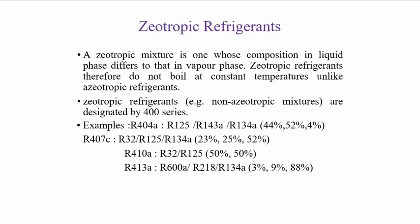Then we have zeotropic refrigerants. A zeotropic mixture is one whose composition in liquid phase is different from that in the vapor phase. Zeotropic refrigerants therefore do not boil at constant temperature. Unlike azeotropic refrigerants, zeotropic refrigerants are designated by the 400 series. Examples are 404A, 407C, and many more.